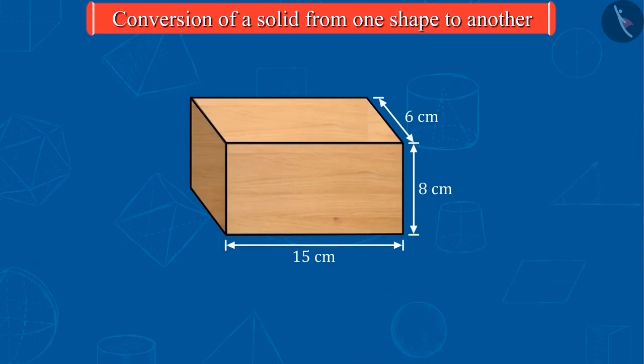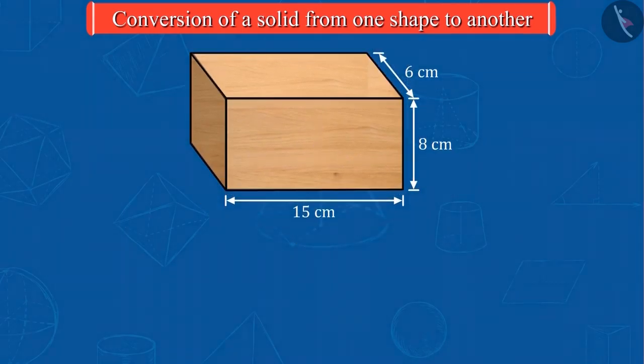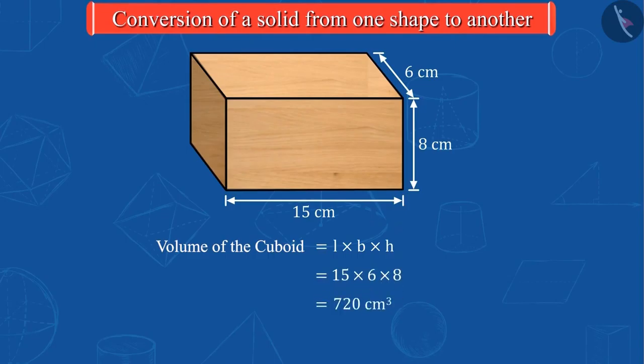Now, let's look at this piece of wood. Its length is 15 cm, width is 6 cm, and height is 8 cm. Can you guess the volume of this piece of wood? Perfect! The volume of this piece will be 720 cm³.